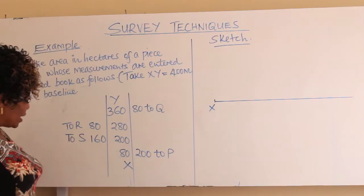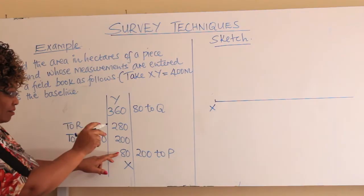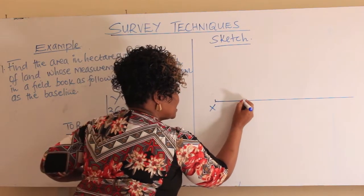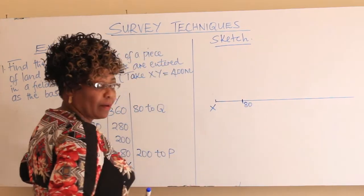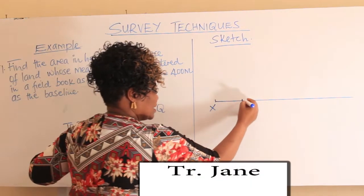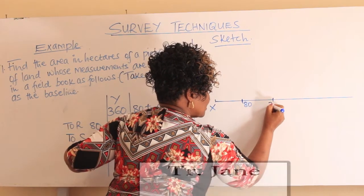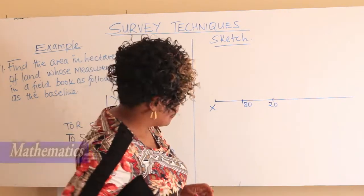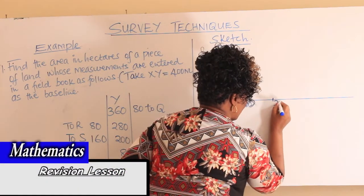From X, you go and put a mark at 80 — you approximate. Let this be 80 meters. Write it there. From there, you go and fix 200. You just estimate. If this is 080, this is 200. Let's assume it's somewhere here.